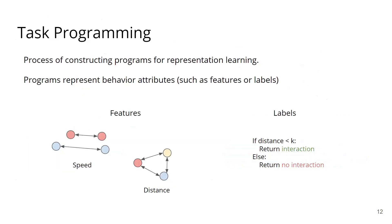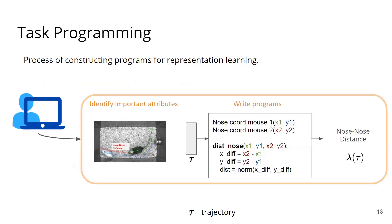The main idea of our work is to use expert structural knowledge expressed as programs to supervise representation learning. These programs encode attributes that are useful for studying behavior, such as speed of agents, distance between agents, or other labels corresponding to behavior. We call the process for creating these tasks for representation learning task programming. Domain experts can do task programming by identifying important attributes from trajectory data, writing programs to compute this attribute from trajectories, and then this program can be used in our representation learning framework.